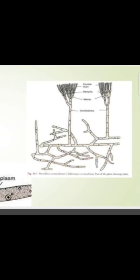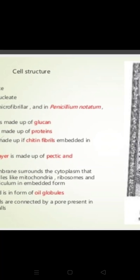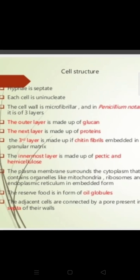After discussing the plant body, we will now discuss the cell structure of Penicillium mycelium. The hyphae are septate, showing septa in the cell structure. Each cell is uninucleate, meaning there is a single nucleus in each cell.